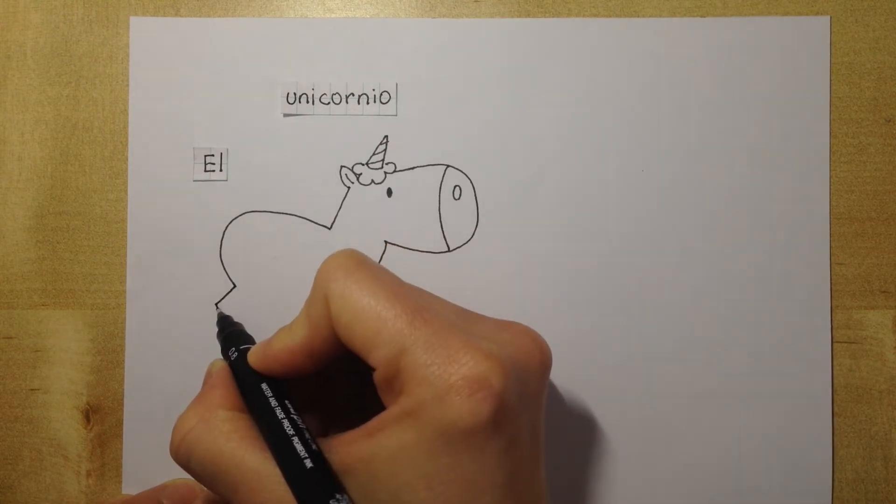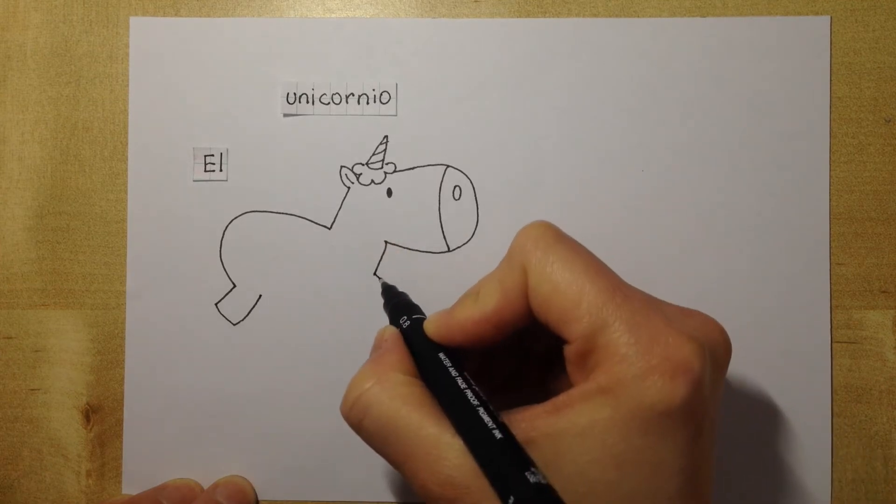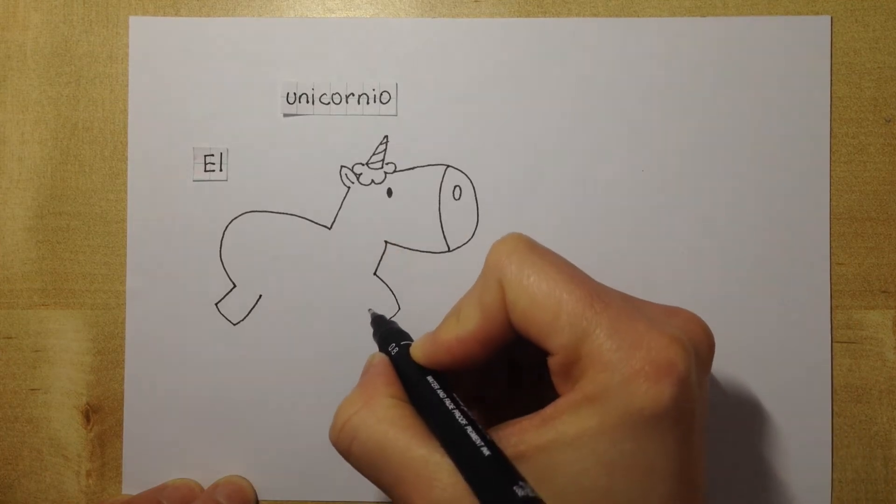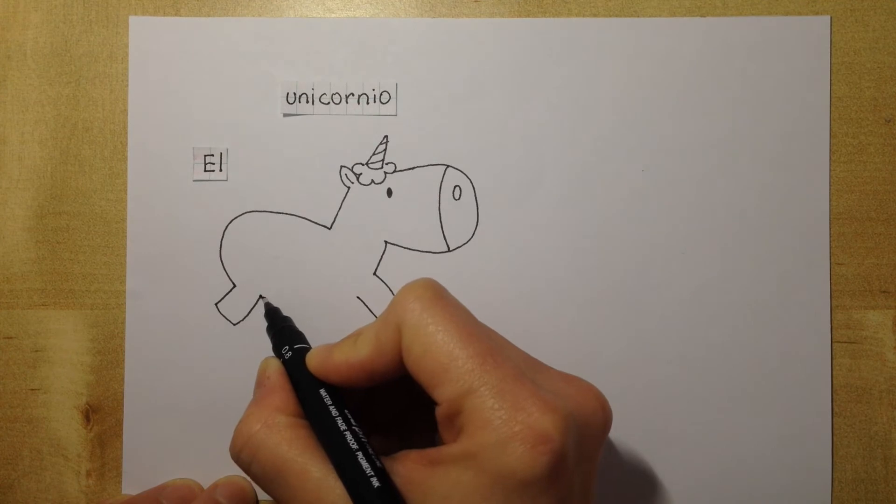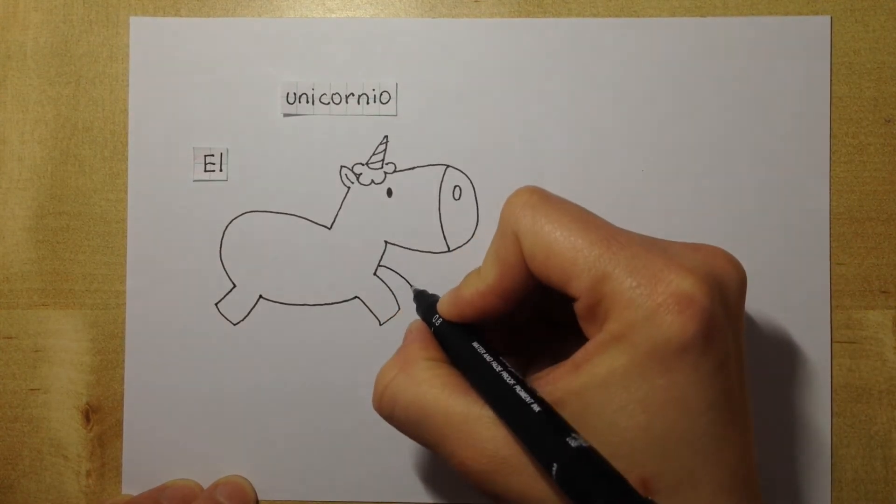It's a little tilt to the back because the unicorn is jumping and his front leg the same, tilted to the front. Then we make the belly.